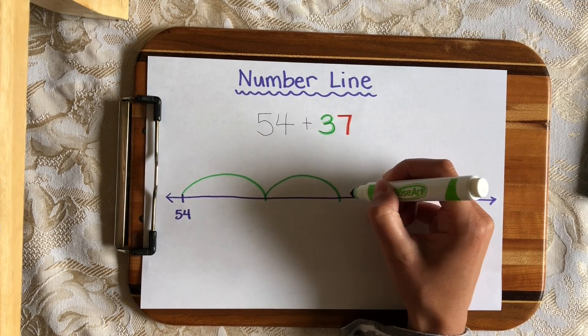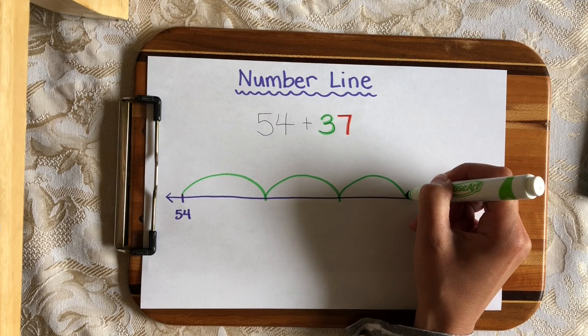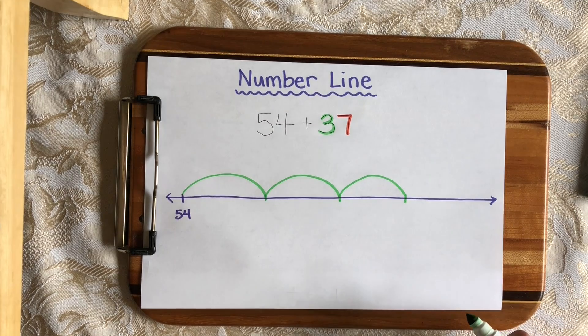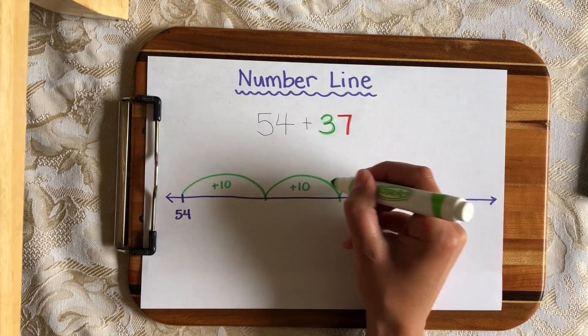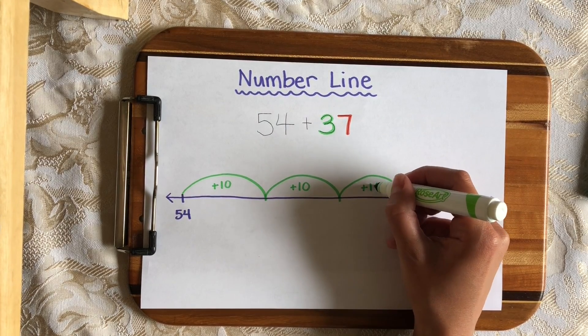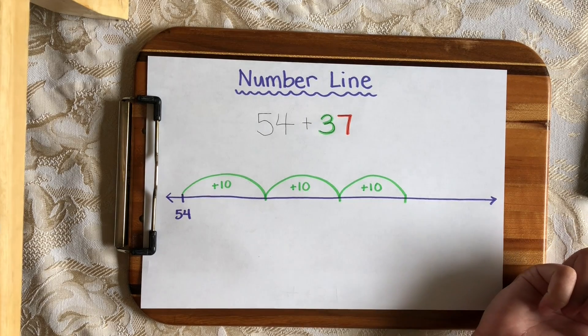One, two, three. And so I know how big these hops are, I'm going to label them with a plus 10. And that plus 10 will also remind me that I'm adding instead of subtracting. I'm moving to the right instead of the left.